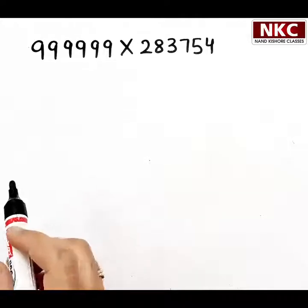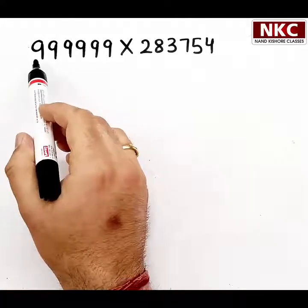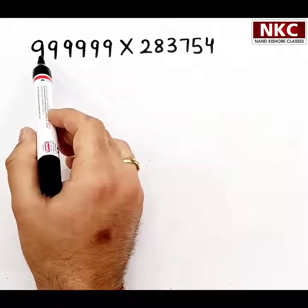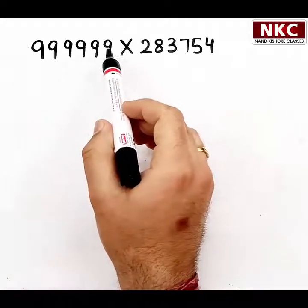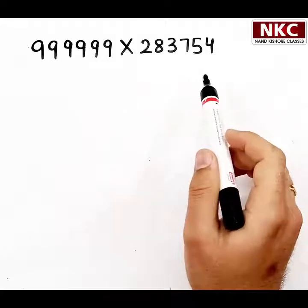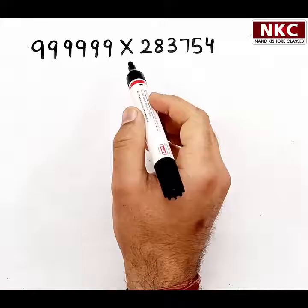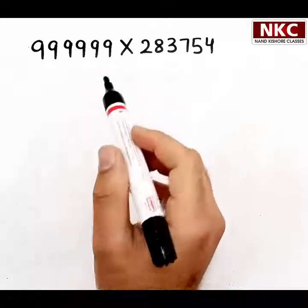Hello friends, welcome to Nandakishore classes. Today we are going to learn a shortcut trick for multiplication. Look at the situation on your screen: 999999 multiply by 283754. It's a big value but we are going to learn a trick. In a fraction of seconds you can do this multiplication.